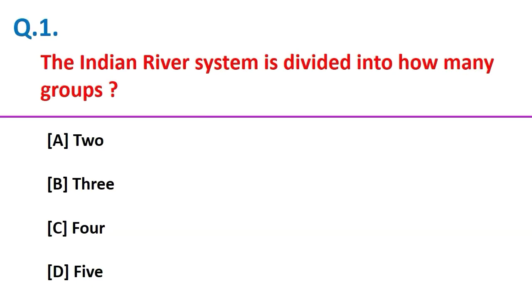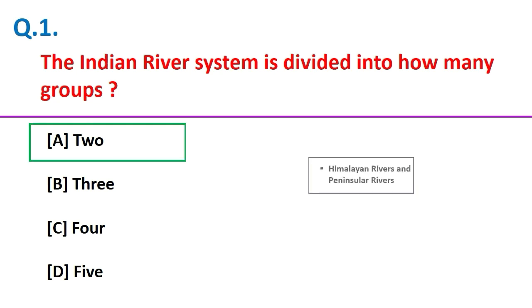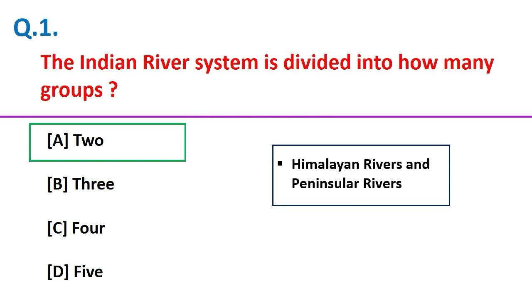The Indian river system is divided into how many groups? Two groups. They are Himalayan rivers and Peninsular river system.